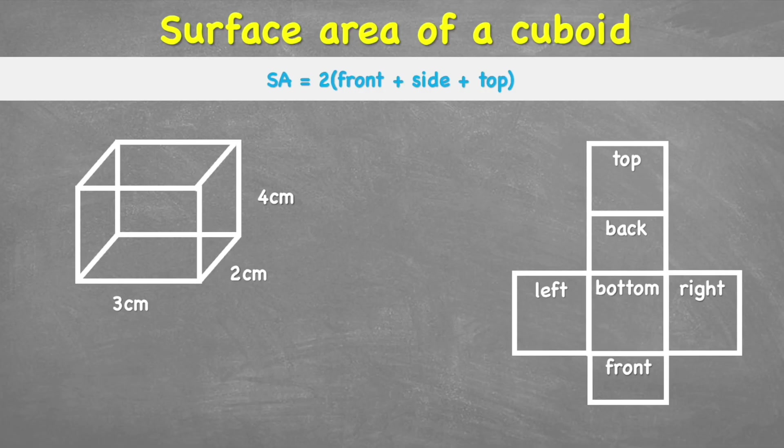So if we take a look at this cuboid here we have on the screen, we can see that a cuboid is made of six faces that are all rectangles. So if you can imagine this cuboid laid out in its 2D net, we can see we have a top, a bottom, front and back, and left and right.